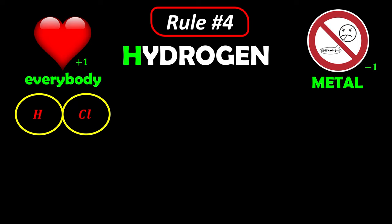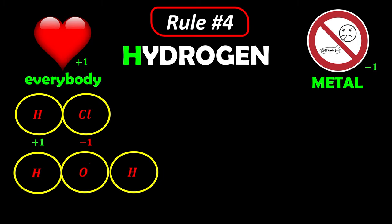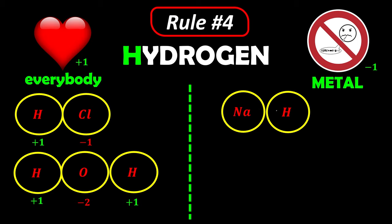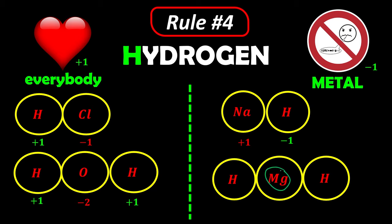For example: hydrogen chloride — chlorine is not a metal, so hydrogen is +1, and chlorine must be −1. For water H2O — oxygen is non-metal, so hydrogen is +1, and oxygen is −2. But for sodium hydride, sodium is a metal, so hydrogen becomes −1, and sodium is +1. For magnesium hydride MgH2, magnesium is a group two metal, so hydrogen is −1, and magnesium is +2.